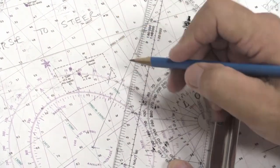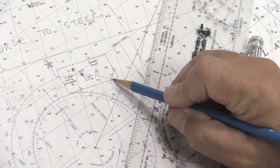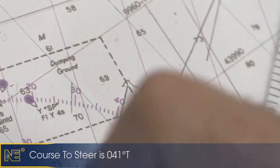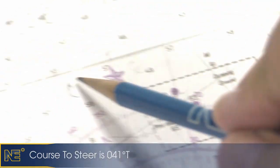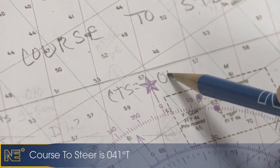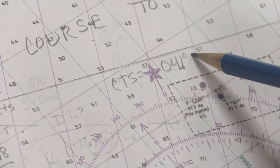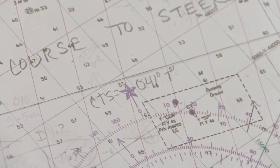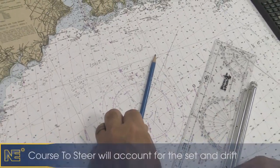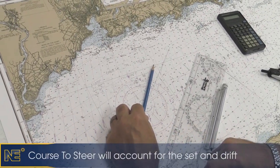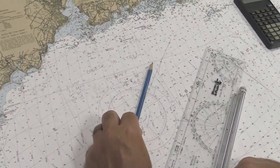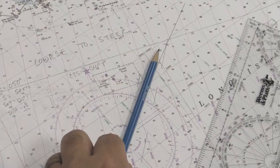From the center of the compass rose we read the direction through the outer ring, and we find that our course to steer is 41 degrees — zero four one degrees true. That is the course we would steer in order to allow for the set and drift.